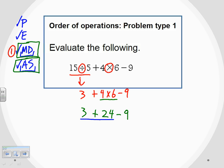3 plus 24, that's going to give me 27. Bring down the minus 9. And now that I am left with only one operation, it's the one that has to be done next. 27 minus 9, that gives me 18. So our simplified answer is 18.